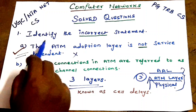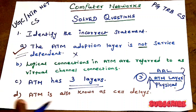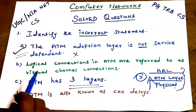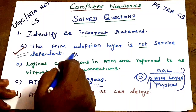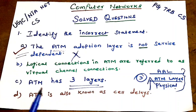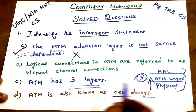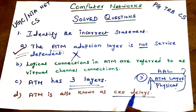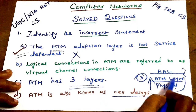Question 1: Identify the incorrect statement. There are 4 statements; identify which is incorrect. The answer is A — A is the incorrect statement. ATM expands to Asynchronous Transfer Mode. ATM is also known as Cell Relay Service or Cell Relay. ATM has 3 layers. From bottom to top: Physical Layer, ATM Layer, and ATM Adaptation Layer.